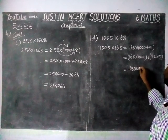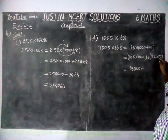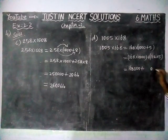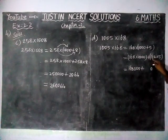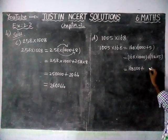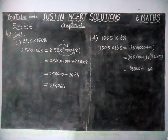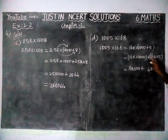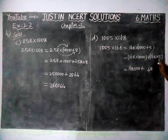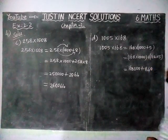Now for 168 into 5: 8 fives are 40, write 0, carry 4. 6 fives are 30, plus 4 is 34, write 4, carry 3. 1 five is 5, plus 3 is 8. So 168 into 5 equals 840.